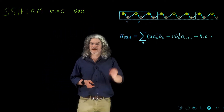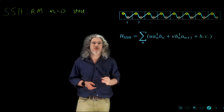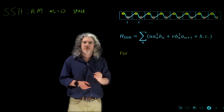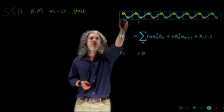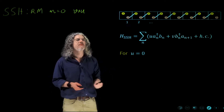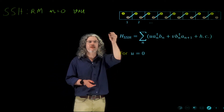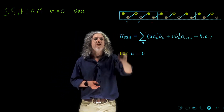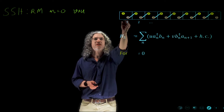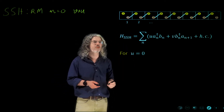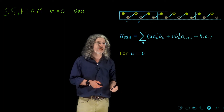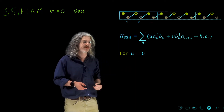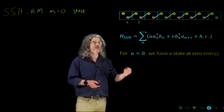Now let's start to discuss what are the properties of this model. First, let's assume that U is equal to zero. For U equal to zero, the blue lines will just not be there. U was representing the coupling between A and B in the same unit cell; now it's zero, there is no coupling there. So if we have a finite chain, the first atom is disconnected from the chain as well as the last atom. The energy of each of these states will be equal to zero, so we have a state of zero energy.